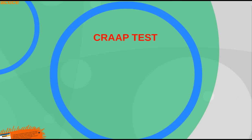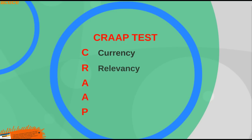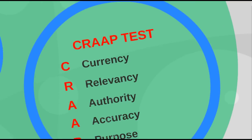The way to do that is through the CROP test — actually the CRAAP test — which is an acronym that breaks down into these categories: Currency, Relevancy, Authority, Accuracy, and Purpose. Let me go through them.